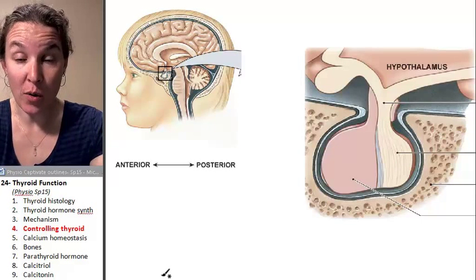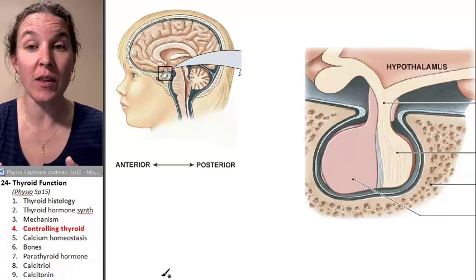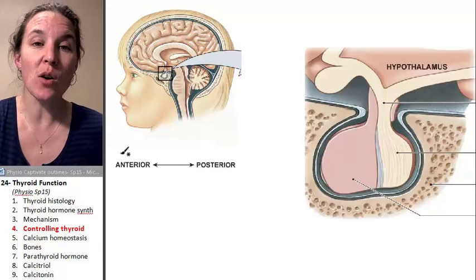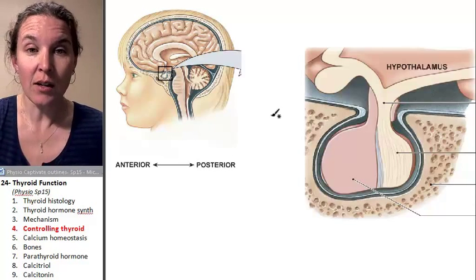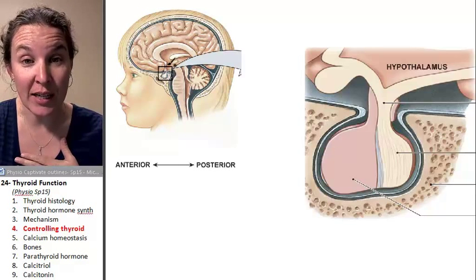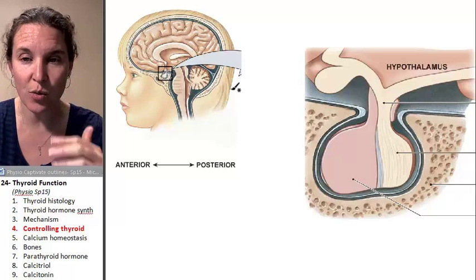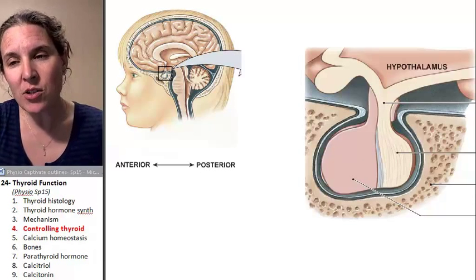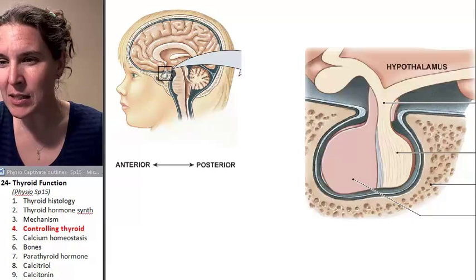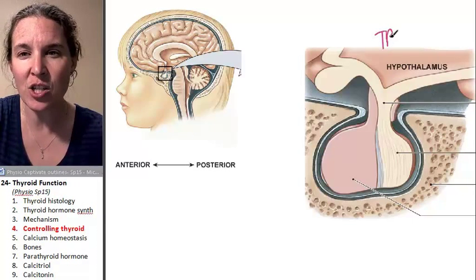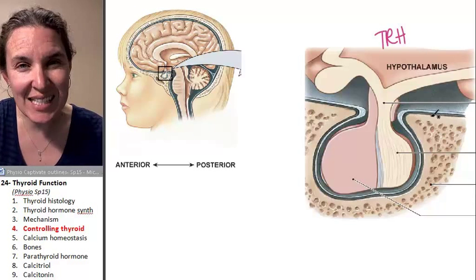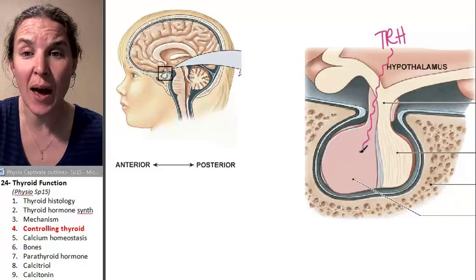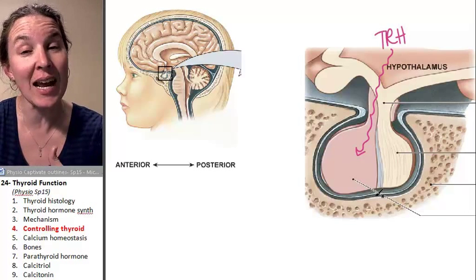I want to remind you about thyroid hormone and how this was one of the hormones regulated by the hypothalamus and the pituitary. Looking at this diagram of the half-headed figure, the pituitary gland and hypothalamus are oriented here. The hypothalamus produces a hormone called TRH, or thyrotropin-releasing hormone, which is dumped into the portal system between the hypothalamus and anterior pituitary.